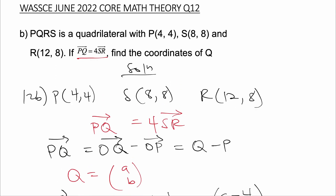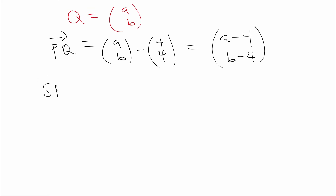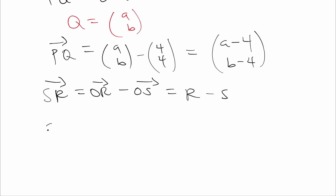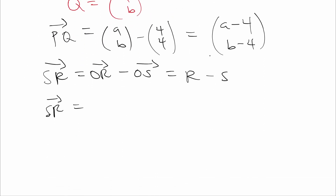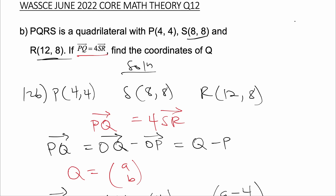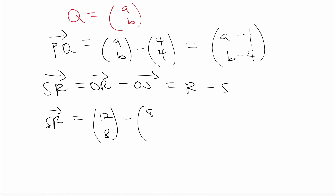Now let's find SR. Likewise, SR is equal to the position vector of R minus the position vector of S, which is the same as R minus S. So SR is equal to R, which is (12, 8), minus S, which is (8, 8). This gives us (12 minus 8, 8 minus 8), which equals (4, 0).